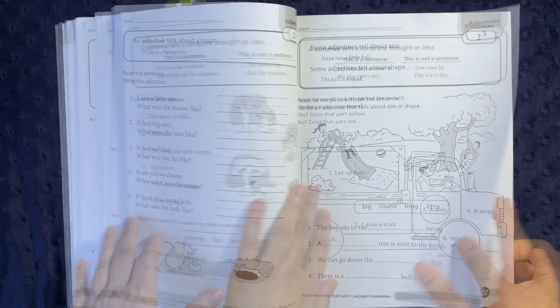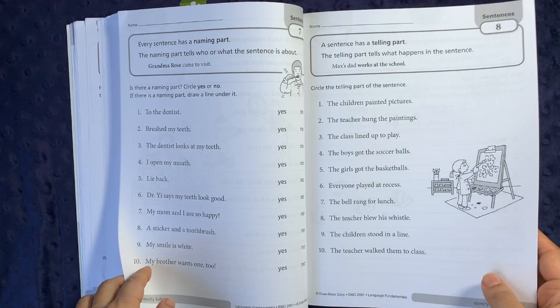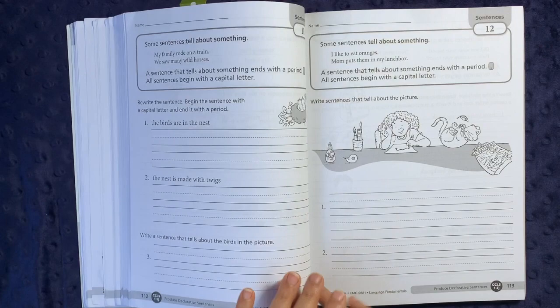There's some pages that are very simple like this, like you're just identifying what the adjective is versus the noun. Here's some sentences, there's some coloring to indicate comprehension of what the different types of sentence parts is. Here you're starting to talk about subject and predicate, but they call it naming part and telling part. Whenever books do something like this, I always mention the real word also.